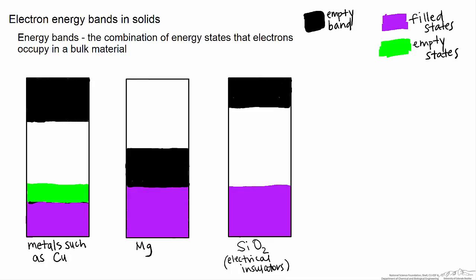This energy differential is called the band gap, and for insulators, this band gap has an energy that's usually much greater than 2 electron volts.